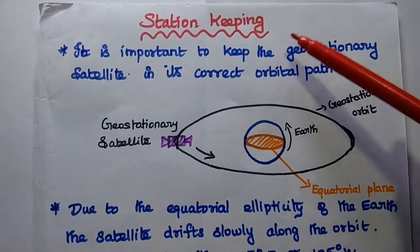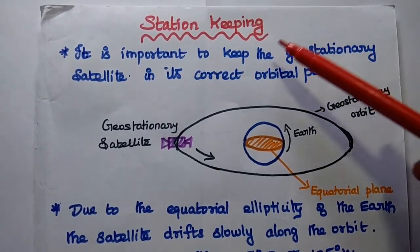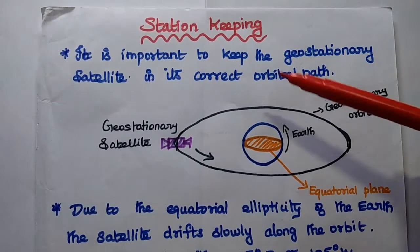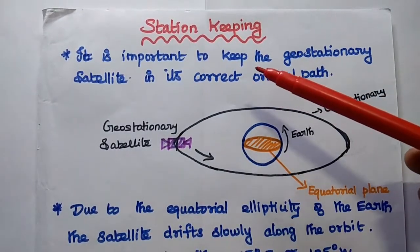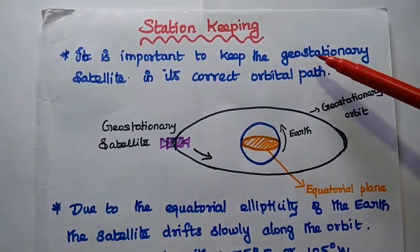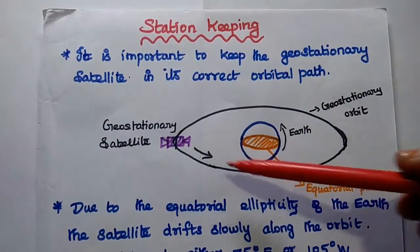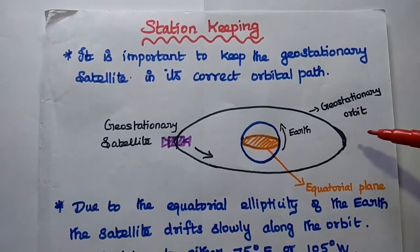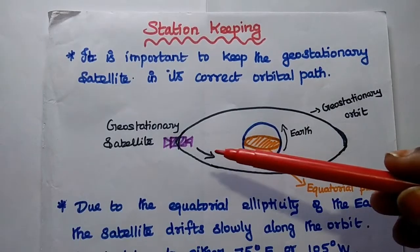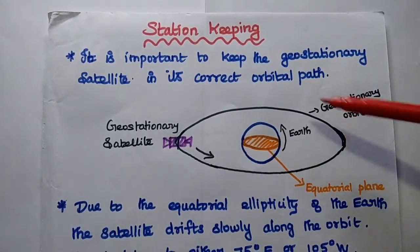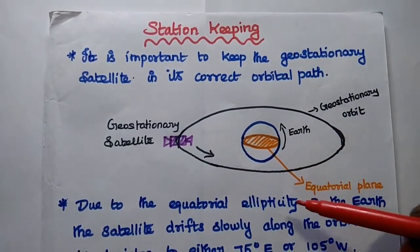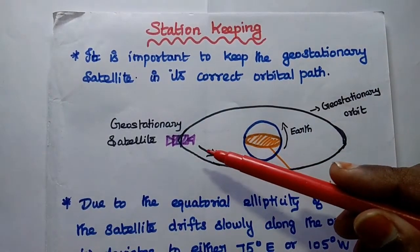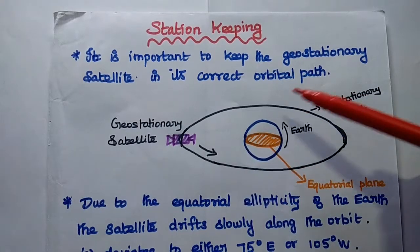Dear students, now we are going to discuss station keeping techniques in satellite communication. In satellite communication, it is very important to keep the geostationary satellite in its correct orbital path. We have to keep the geostationary satellite in its correct path because due to the orbital perturbations, the geostationary satellite may drift slowly along the orbit.